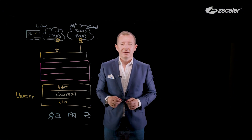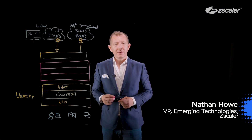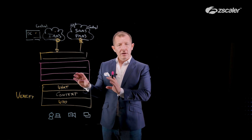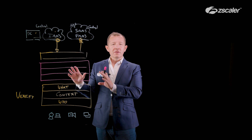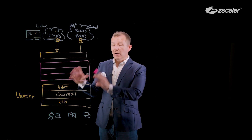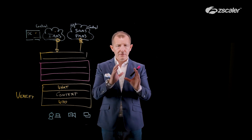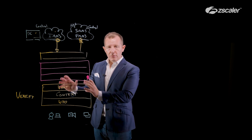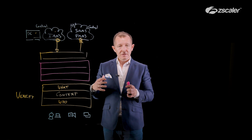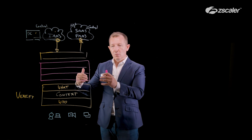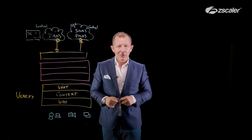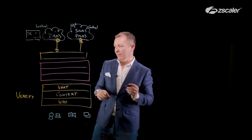Hi, everyone. My name is Nathan Howe. I'm the vice president here at Zscaler for emerging technologies. We covered in an earlier video the idea of zero trust architecture and how the verification of identity — not just of individuals and users, but also of the workloads and IoT, OT, or things — allows us to get granular control before we move into the control phase. And now we're going to cover the control phase.